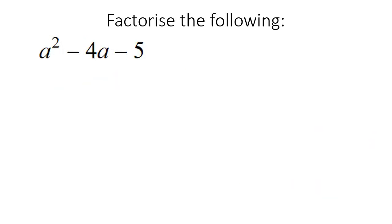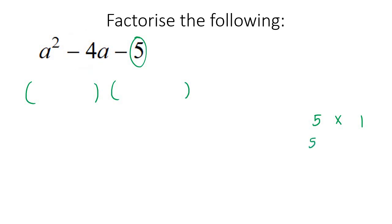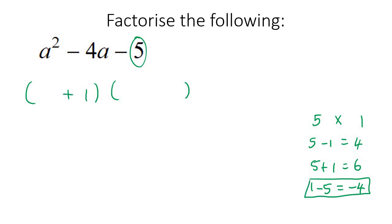Here's our next example. It's definitely a trinomial, so make two brackets. Take the 5 - you can only make it as 5 times 1. Now how do you make minus 4? Five minus 1 is positive 4 - not what you want. Five plus 1 is 6. But 1 minus 5 is negative 4 - that's what we want. So the 1 is positive and the 5 is negative. Put an A in each bracket, and you are done. That is how you factorize a trinomial.